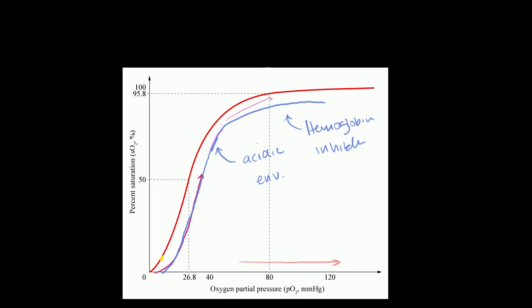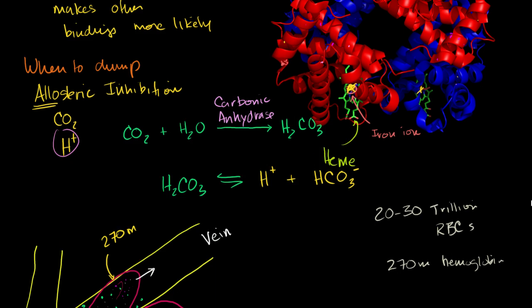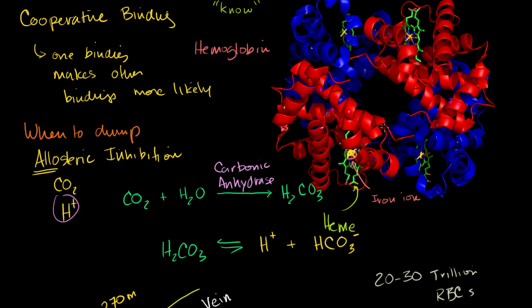So I don't know how exciting you found that. But I find it brilliant, because it really is the simplest way for these things to dump their oxygen where needed. No GPS needed. No robots needed to say, oh, I'm now in the quadriceps, and the guy is running. Let me dump my oxygen. It just does it naturally, because it's a more acidic environment with more carbon dioxide. It gets inhibited, and then the oxygen gets dumped and ready to use for respiration.